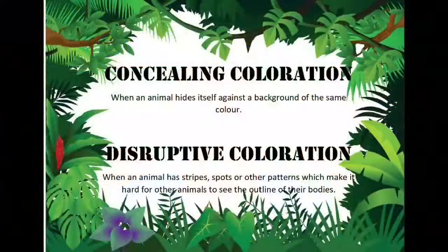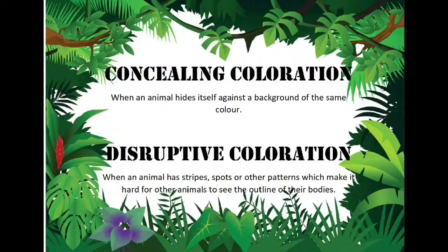Now who remembers the four types of camouflage? Don't worry, we're going to recap. So we have concealing coloration — this is when an animal hides itself against a background of the same color. For example, animals that live in the arctic would have white coloring to blend in with the snow. Then you've got disruptive coloration — this is when the animal has spots, stripes, or patterns to break up their outline so it doesn't stick out against its background.